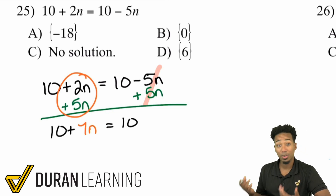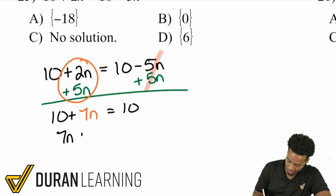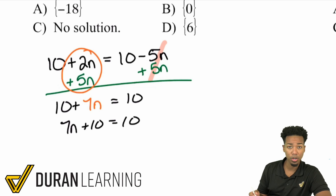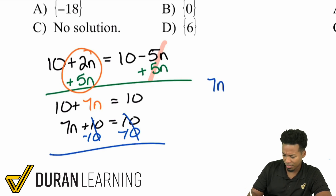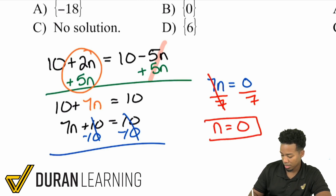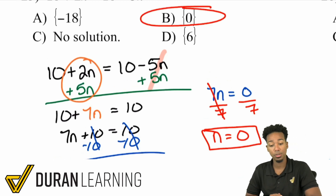Now remember, 1 plus 2 is the same as 2 plus 1, so if it helps, you can write it as 7n plus 10 equals 10. To finish this off, subtract 10 from both sides. It cancels out on the left, and it cancels out on the right as well — pretty interesting. Now we have 7n equals 0. When we divide both sides by 7, it cancels on the left, giving us n equals 0. Because 0 divided by anything is going to be 0. The answer is n equals 0.